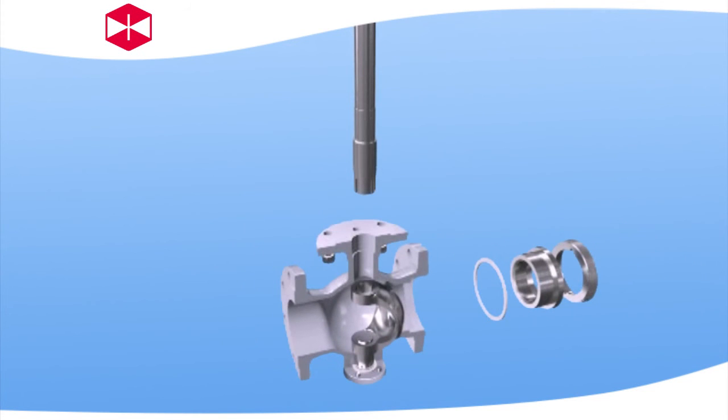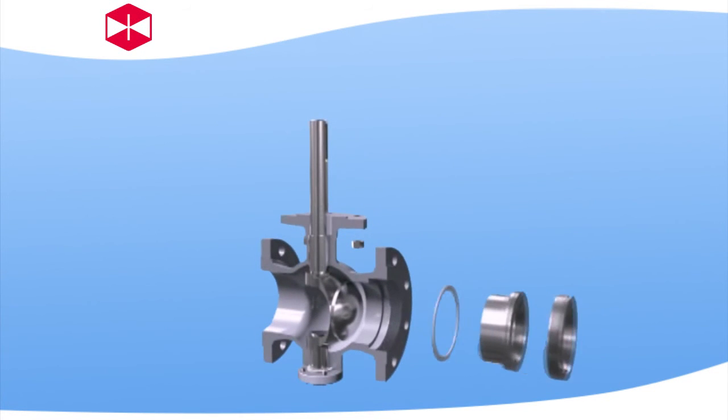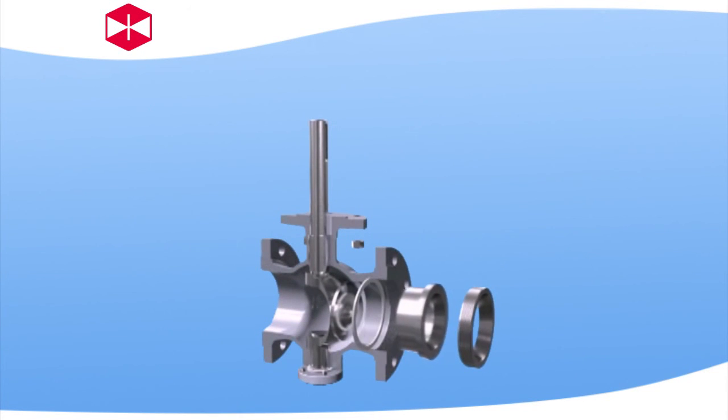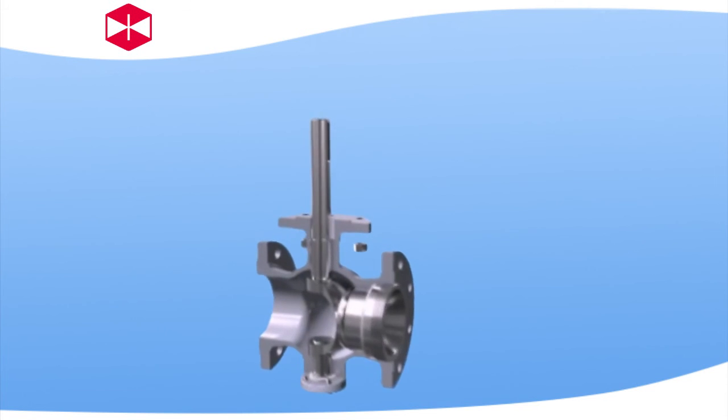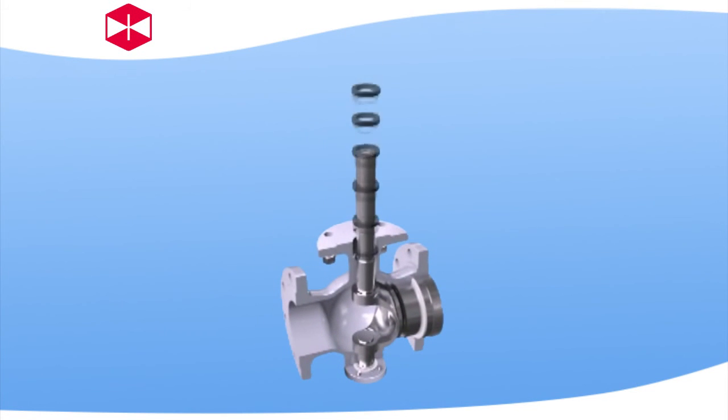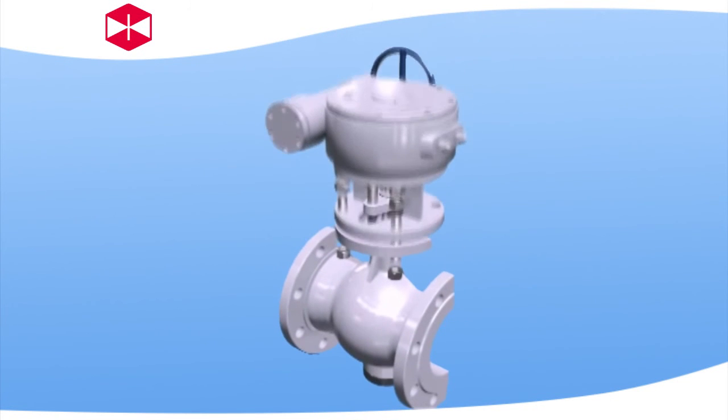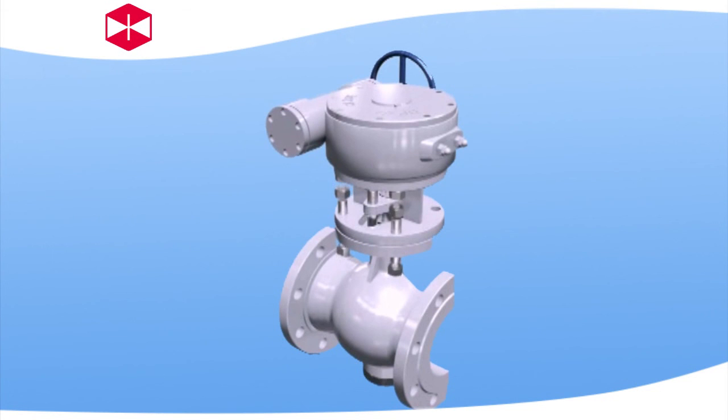The weld joint is done using automatic welding technology. During the welding process, the weld joint is far away from the sealing seat and packing area, which completely avoids damage of the seat and packing due to overheating. Due to the location of the weld joint, there is no blind area of flaw detection. The whole area can be inspected with X-ray.